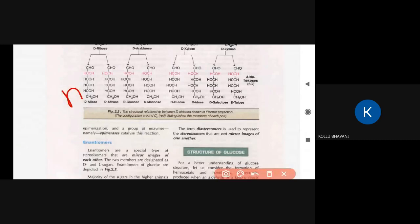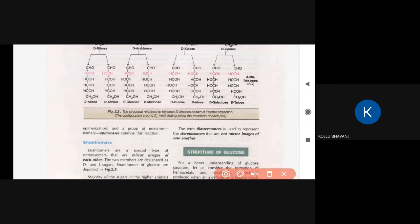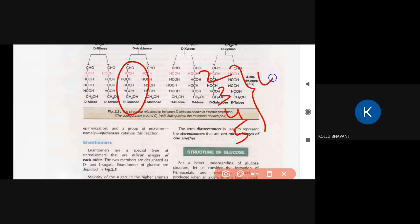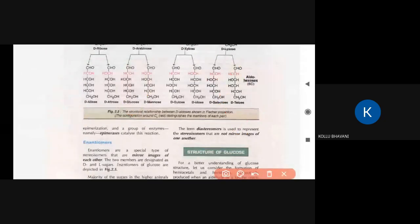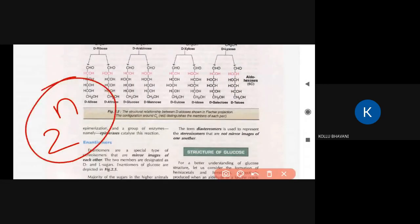An asymmetric carbon has four different groups attached. The number of possible isomers is 2 to the power of n, where n equals the number of asymmetric carbons. For glucose, the second carbon is asymmetric, the third carbon is asymmetric, the fourth carbon is asymmetric — giving 4 asymmetric carbons total. Therefore, 2 to the power of 4 equals 16 isomers for glucose.